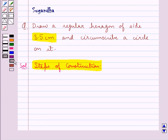First we draw a line segment AB equal to 3.5 cm.